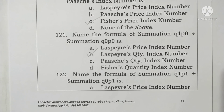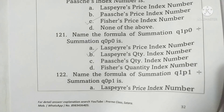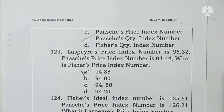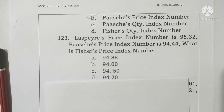Question 122: name the formula — summation Q1P1 divided by summation Q0P1. This is the formula of Paasche's quantity index number. Option C is correct.